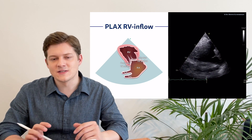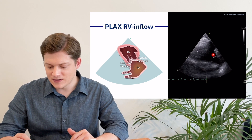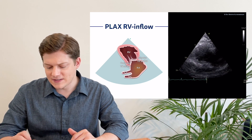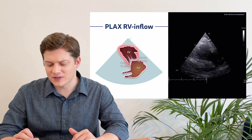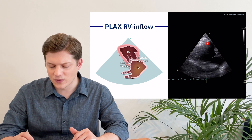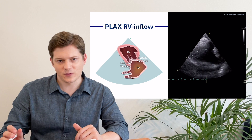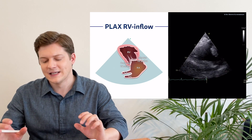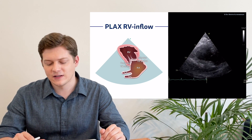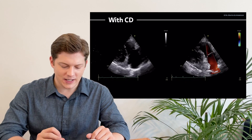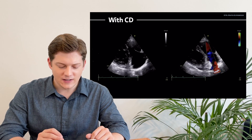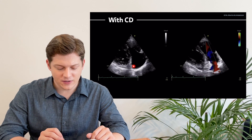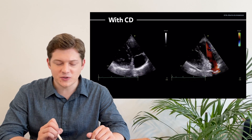Sometimes the view doesn't look that nice — it can also look like this, where you still see the tricuspid valve with the anterior and posterior leaflet, the right atrium, and the right ventricle to a certain degree. We can also differentiate the free wall of the right ventricle somewhat, but the image quality is reduced. Still, the information we get can be crucial. Adding color Doppler — back in the B-mode image — we can visualize the anterior and posterior tricuspid valve leaflets, the coronary sinus, the IVC, and the right atrium.